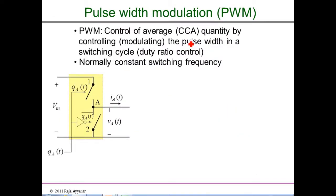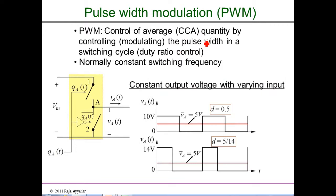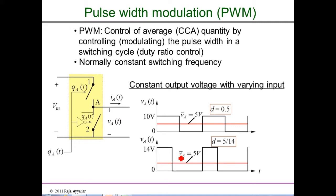As an example of using pulse width modulation, consider a variable input voltage ranging from 10 to 14 volts with a desired constant average output voltage. When V_in is 10 volts, Q is one for roughly half the switching period, giving an average of 5 volts. When V_in increases to 14 volts, the pulse width is reduced so that the average value of V_AN is still retained at 5 volts.